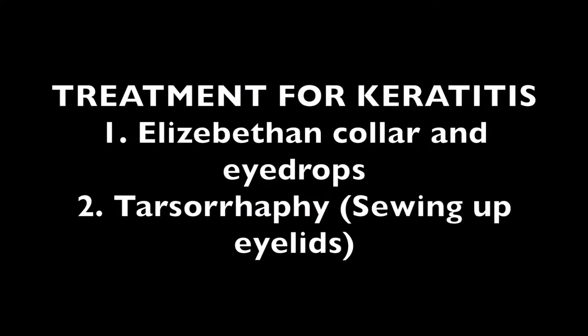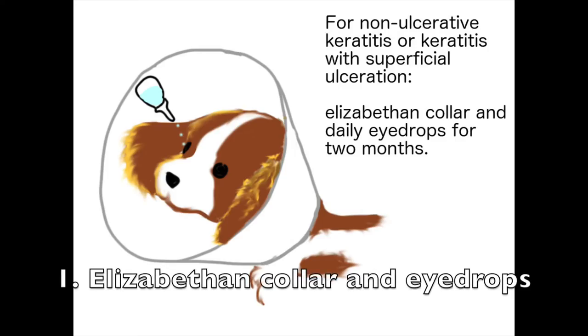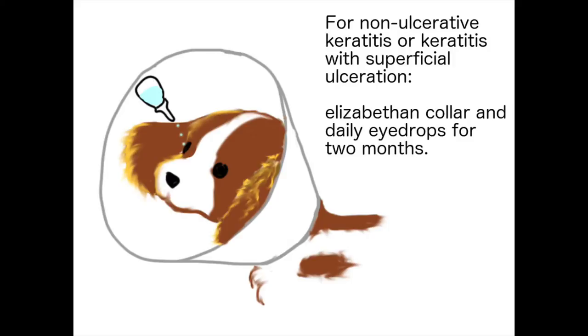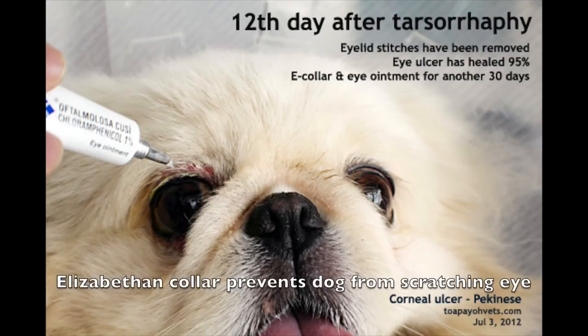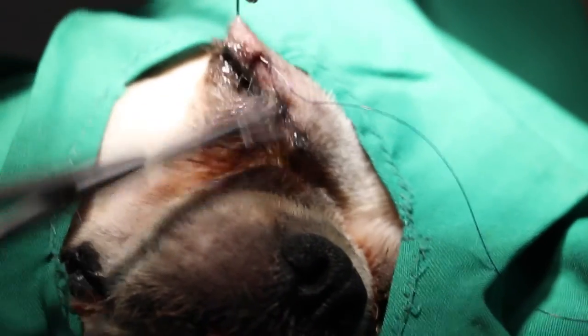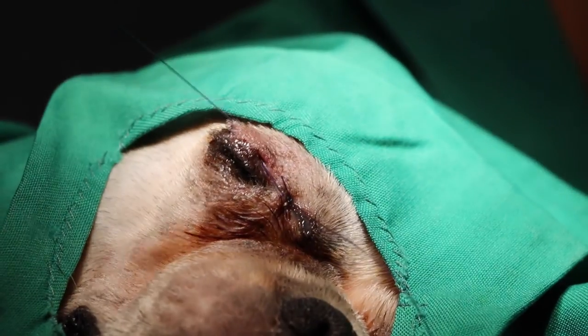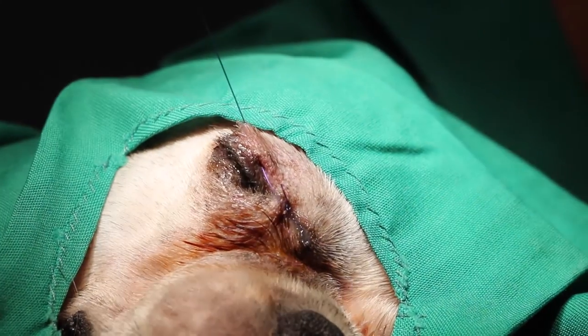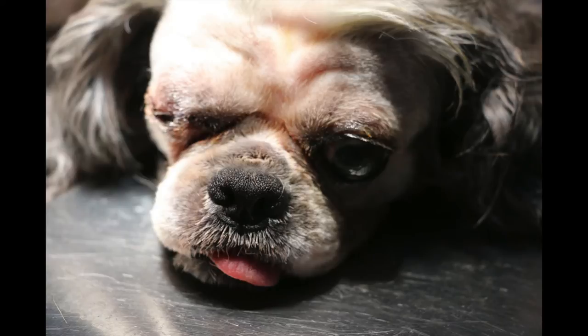There are two common treatments used for keratitis. If the keratitis is non-ulcerative or superficial, eye drops are prescribed and an Elizabethan collar is placed on the dog to prevent scratching during healing. If the keratitis is deeply ulcerative, tarsorrhaphy is recommended — this is a surgical procedure in which the eyelids of the affected eye are sewn shut to protect the cornea during healing.